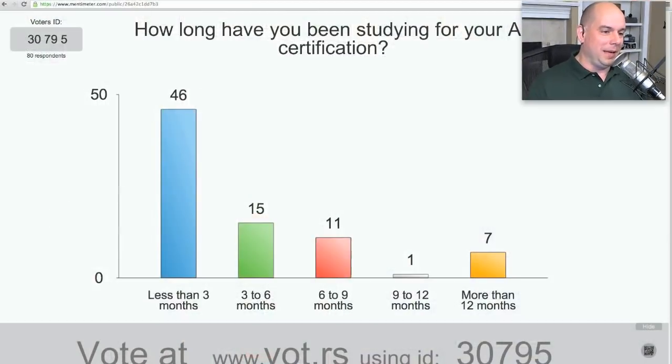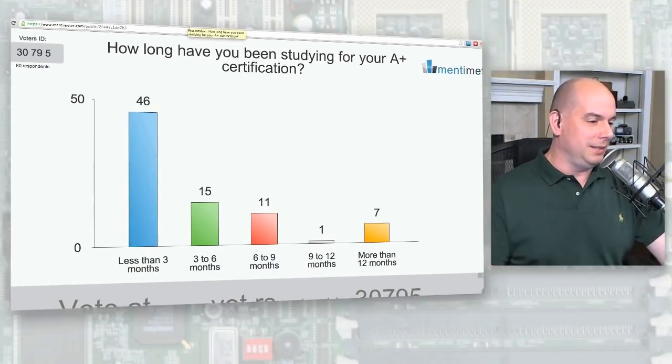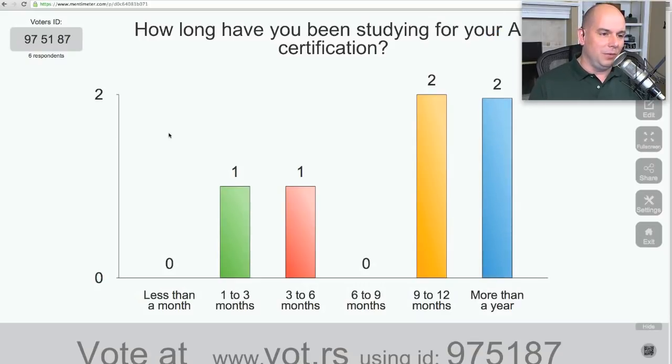Let me pop up a window to show you this information. Now we can see the number — let me make it a little bigger. I brought up the wrong piece from last month. Let's bring up this month's and get the right number there. Now we can see — those of you on the stream watching live can participate today. If you go to vote.rs and type in 975-187, it will take you to this page.